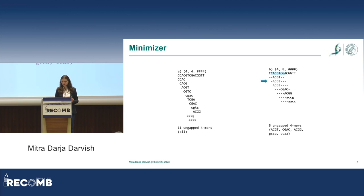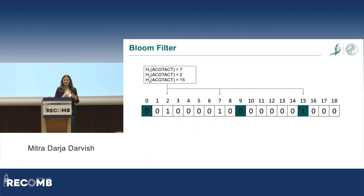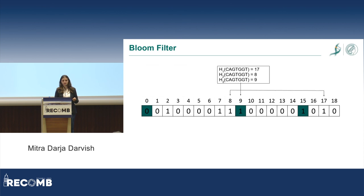Now I want to get to the next important data structure: the bloom filter. It's a probabilistic data structure, which is basically a bit vector. We start with an empty bit vector.